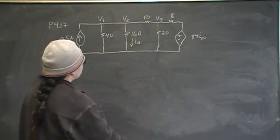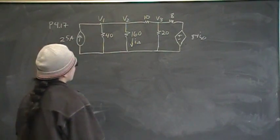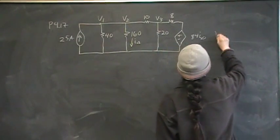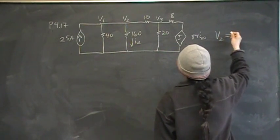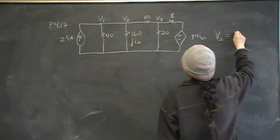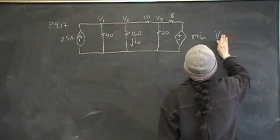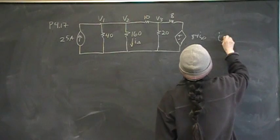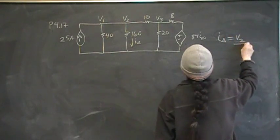And then I said, well, and also we need a dependent equation which says V2 is equal to... excuse me, I delta is equal to V2 over 160.